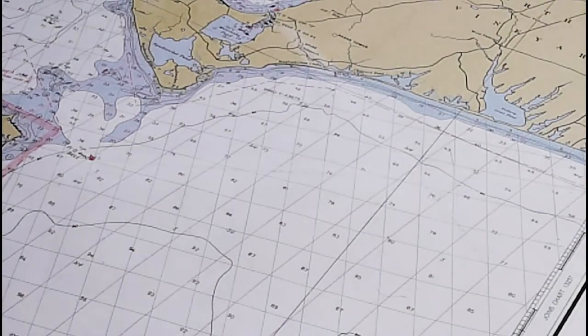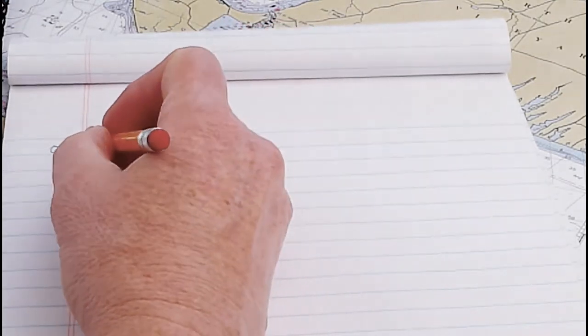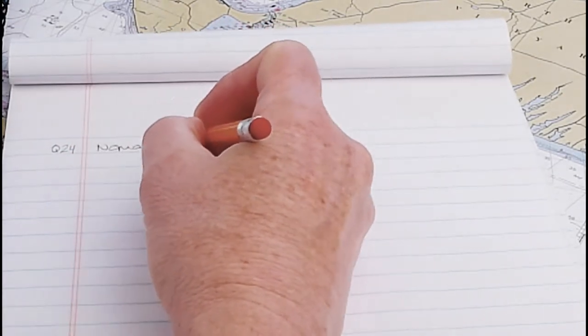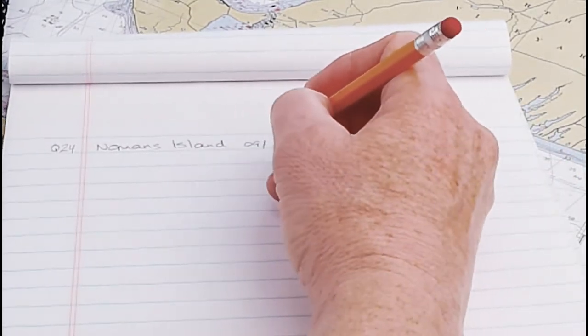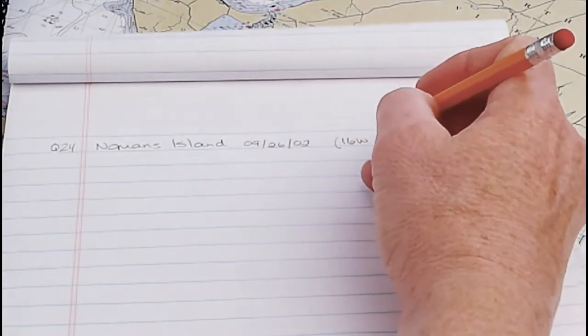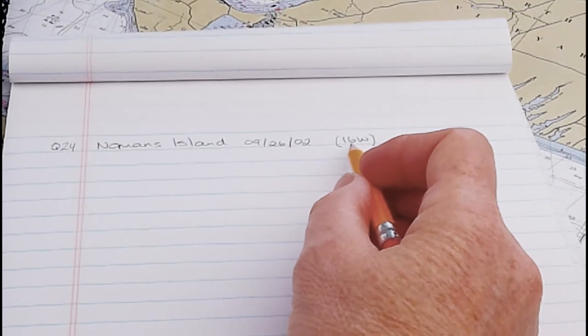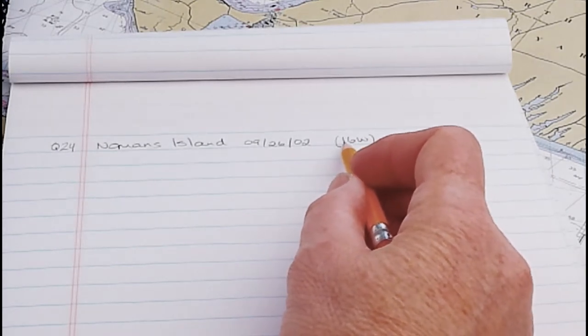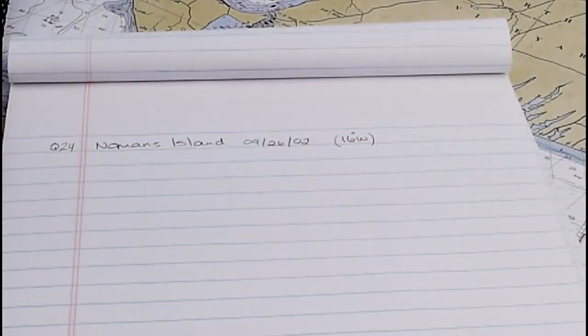So first thing we do, as per usual, is set up our TVMDC table. So this is for question number 24. This is a test question, and I'm going to say no man's island. And it is September 2602, and I'm just going to remind myself that in a previous video, I've already done the conversion with the compass rose, and in 2002, it's a 16 degree to the west difference in magnetic variation.